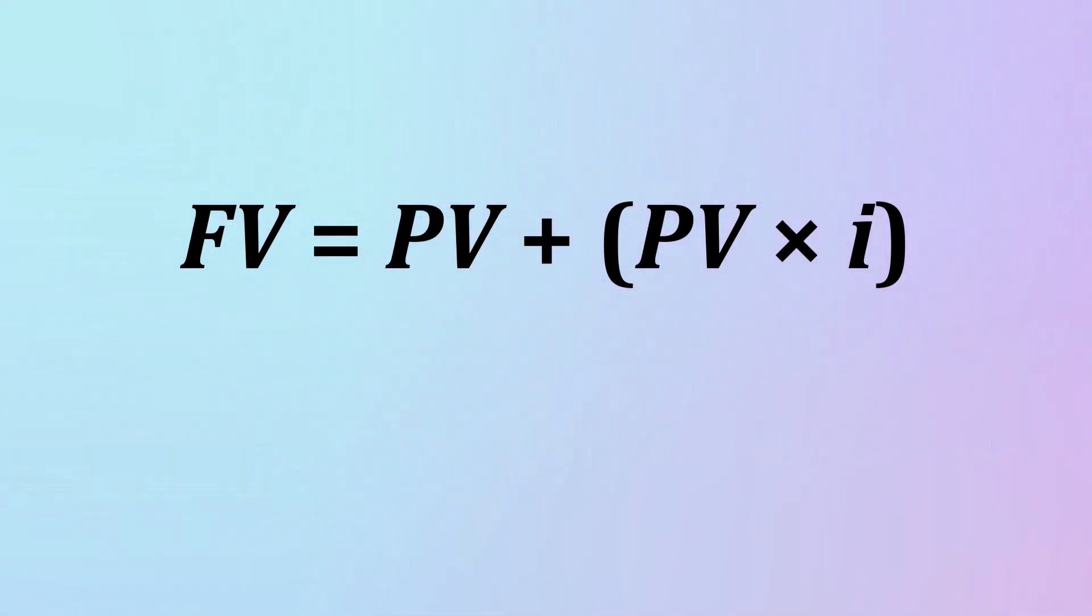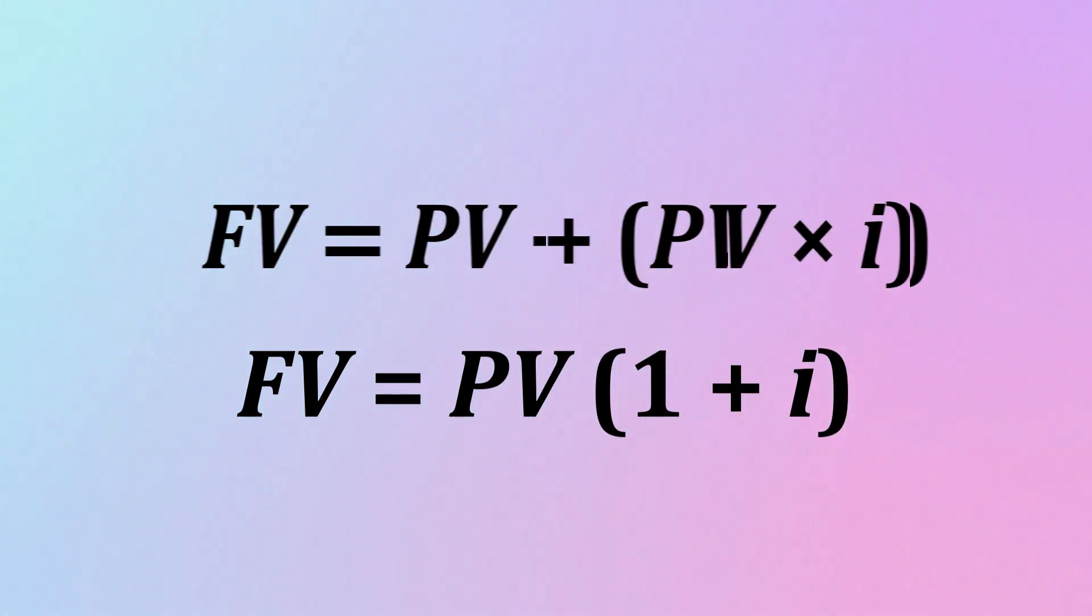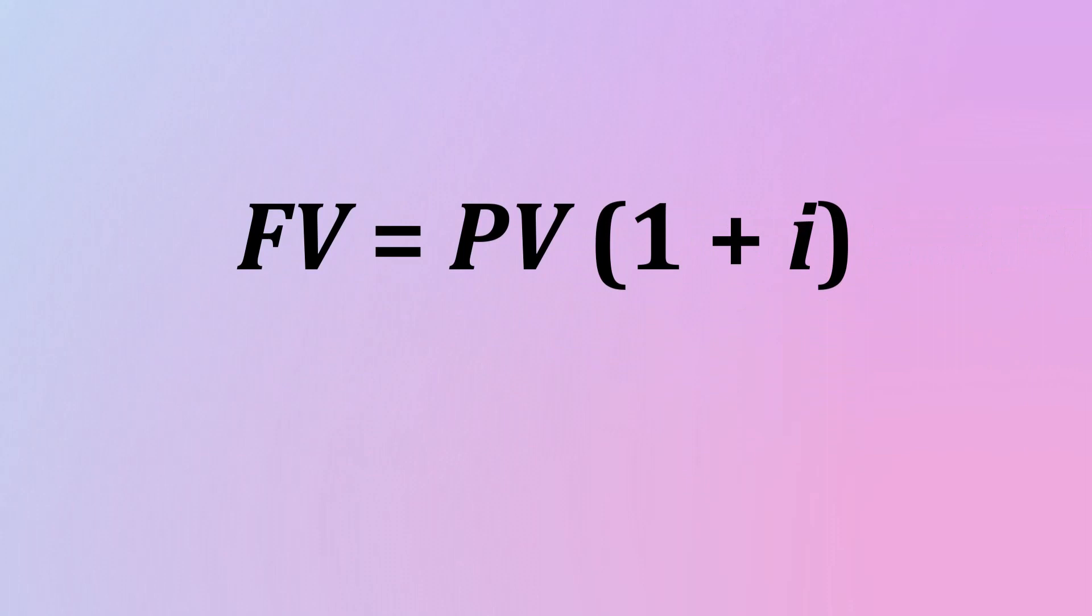Now using some basic algebra, this formula can be manipulated to FV is equal to PV times 1 plus I in parentheses, without changing its meaning. So that's the future value after one period, in our case, one year.